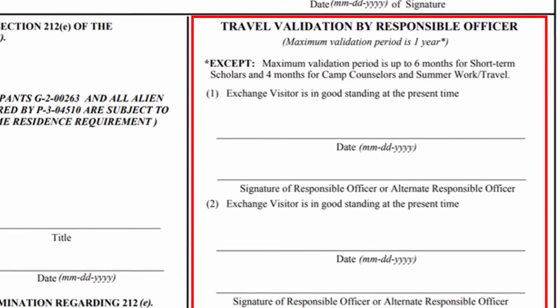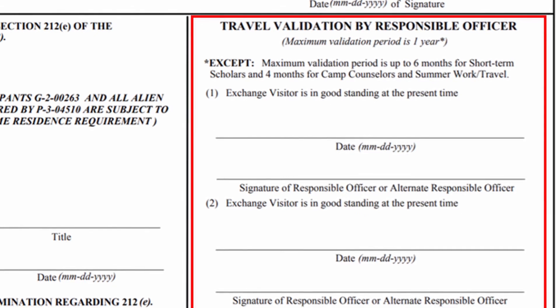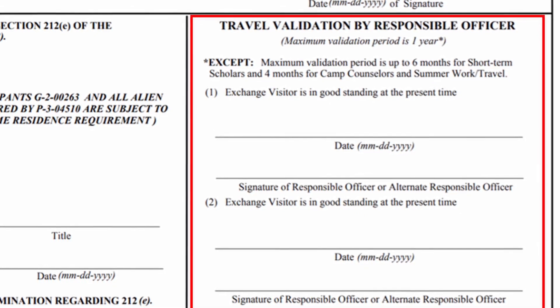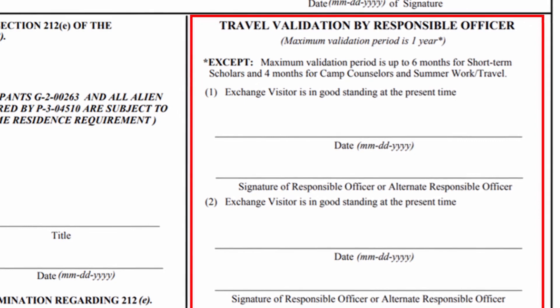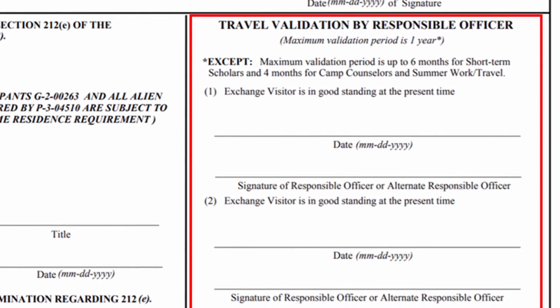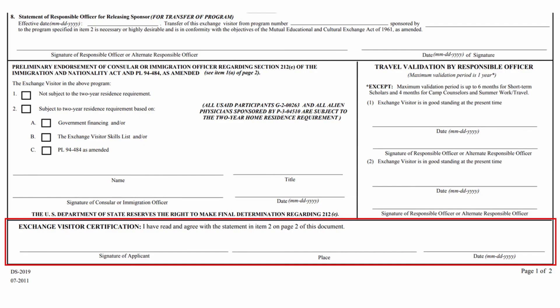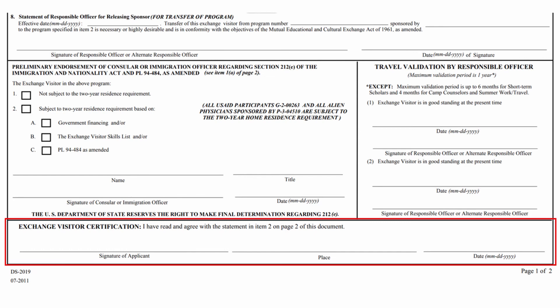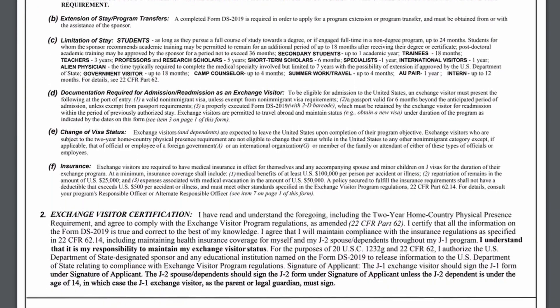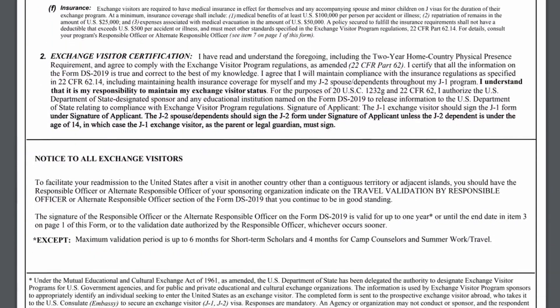The travel validation section on the right is also very important. A valid travel signature from your responsible officer will be required to re-enter the U.S. after a brief departure from the U.S. The very last section on page 1 is the certification section, where you would sign and date the Form DS-2019. You should read and understand the instruction section on page 2 before signing this form.